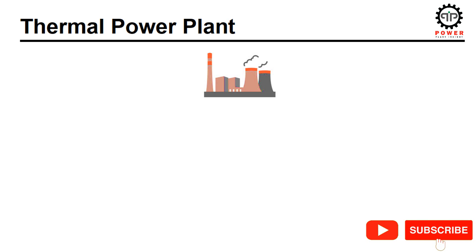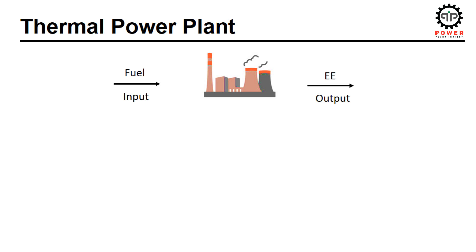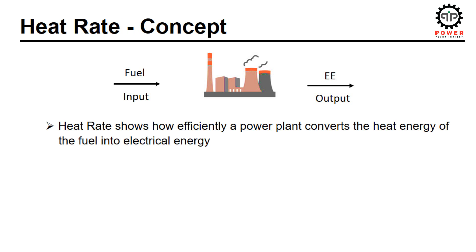Starting from a simple definition of a thermal power plant: a thermal power plant is an entity that converts heat energy of the fuel into electrical energy. In a thermal power plant, we use fuel as an input factor and take electrical energy as output from the system. In very simple words, heat rate is the factor that shows how efficiently a power plant converts the heat energy of the fuel into electrical energy.